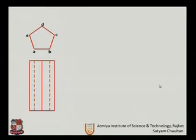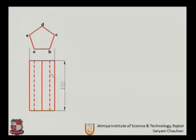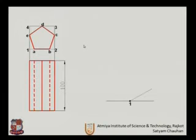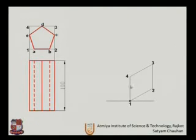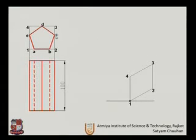Another example is the pentagon prism. The height is 100 mm and the points are named A, B, C, D, and E. We will first complete the plane by drawing the left-hand side view. The distance between point 1 and E is known, so we get point E on line 1-2-4, then point D which will be the midpoint, then C on line 3 to 2, and then A and B on line 1-2.